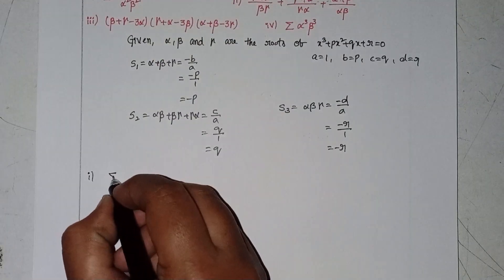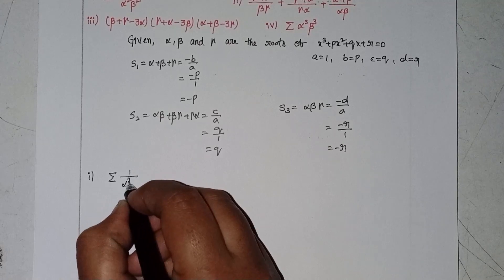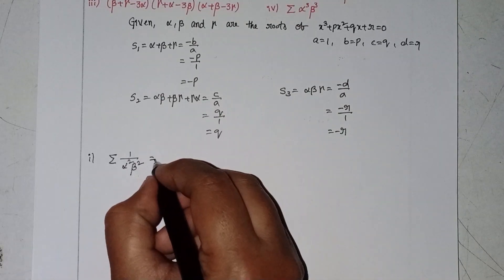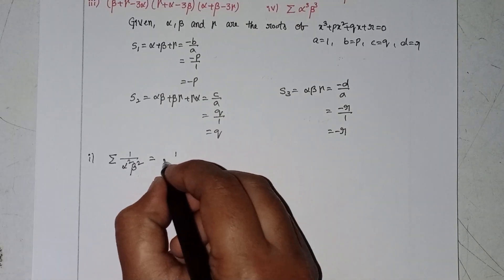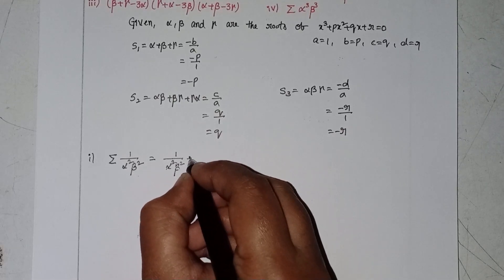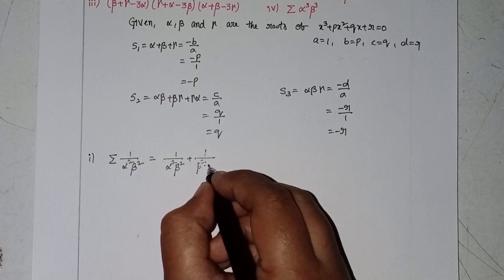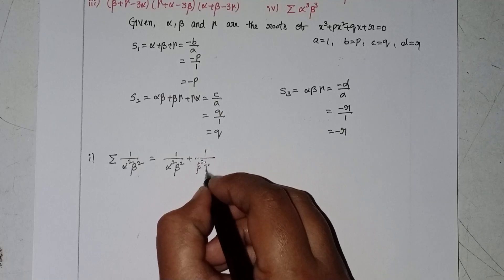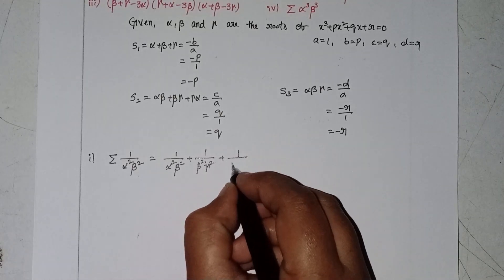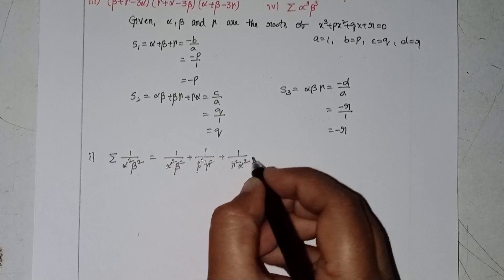For summation of 1/(α²β²), we expand: 1/(α²β²) + 1/(β²γ²) + 1/(γ²α²).